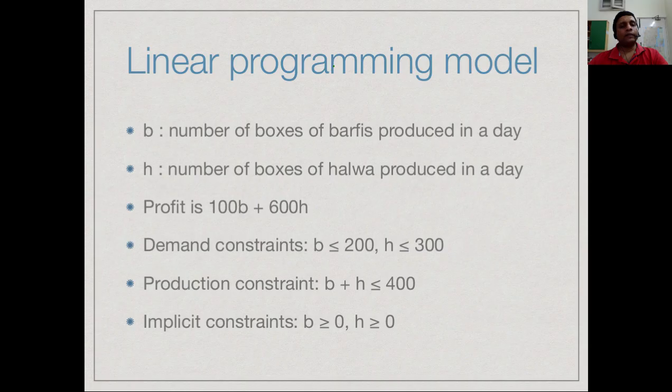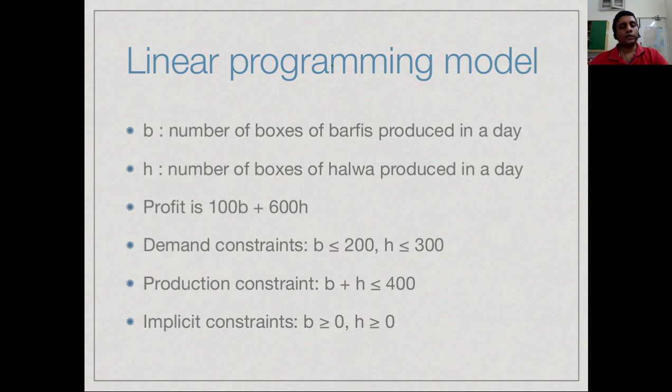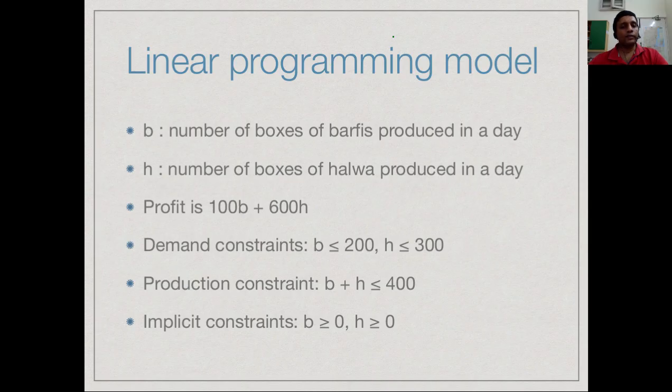Let us start by identifying the variables that we are trying to manipulate. We are talking about the daily production of these sweets, so we will use two variables b and h to denote the number of boxes of barfis and halwa that we produce in a day. Given this, we know that our profit is 100 rupees per box of barfis and 600 rupees per box of halwa, so it is totally 100b plus 600h.